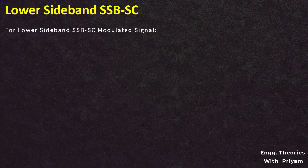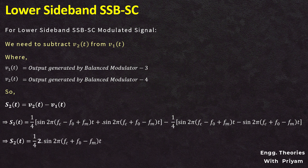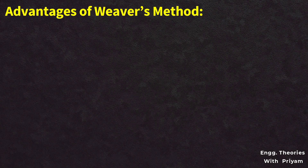For the lower sideband SSBSC modulated signal, we subtract the output of balanced modulator 4 from the output of balanced modulator 3: S2(T) = V1(T) − V2(T). After simplification, S2(T) = ½·sin(2π(FC+F0−FM)T). Substituting F0 = FM/2, the lower sideband SSBSC modulated signal is S2(T) = ½·sin(2π(FC − FM/2)T). This is the equation of the lower sideband SSBSC modulated signal.